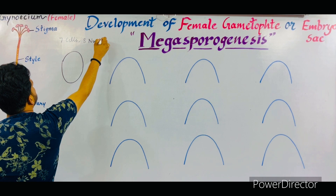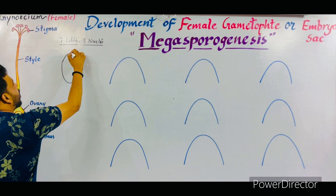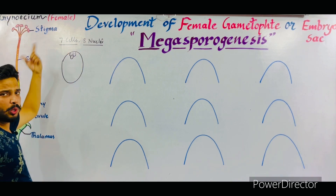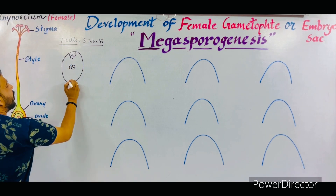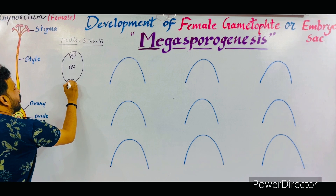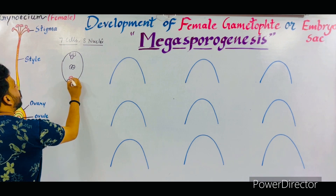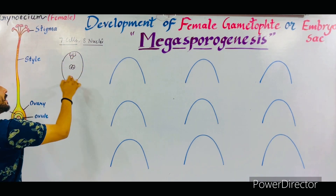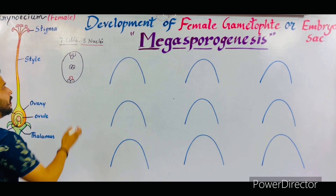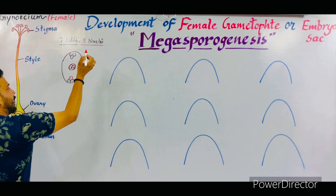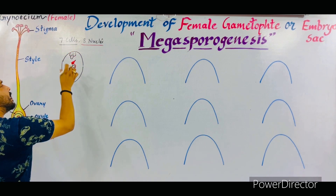In the embryo sac, three cells are termed as the antipodal cells, which look towards the chalaza pole. Two cells lie in the center which are known as polar bodies, containing two nuclei. In the lower region or the micropylar end there are two synergids and one egg cell. So there are eight nuclei in total, and the two polar nuclei in the center fuse together and are converted into a single cell called the central cell or secondary nucleus.